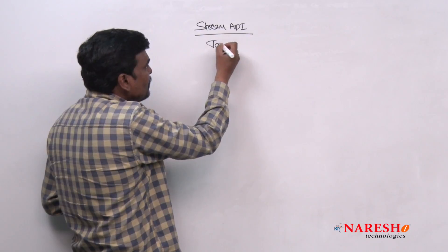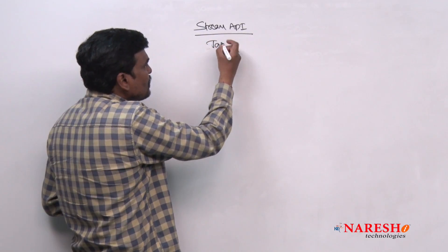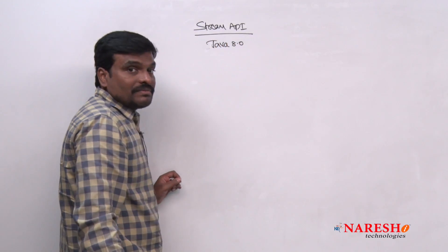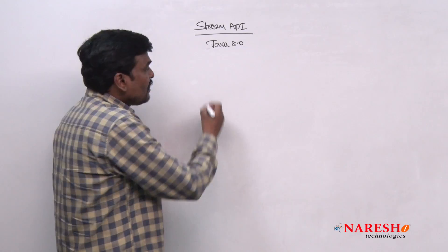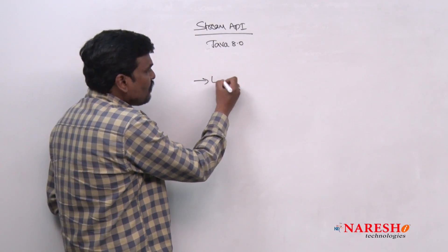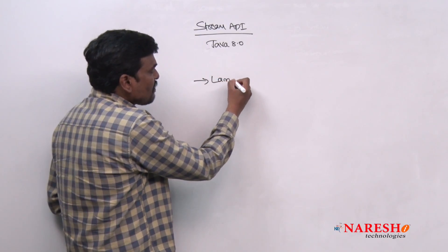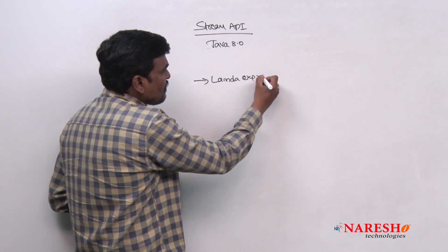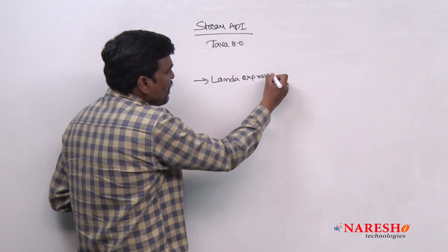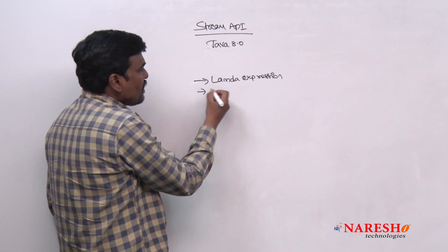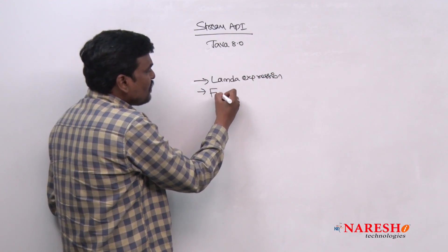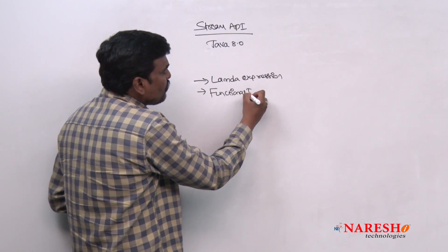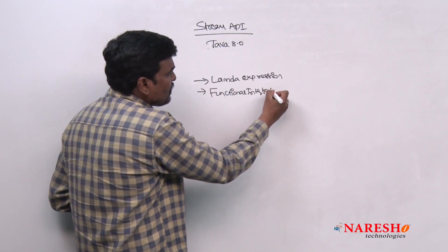This Stream API is introduced in Java 8.0. Now, in the previous videos, we have seen what is a lambda expression, and even what is a functional interface and how to develop a functional interface.